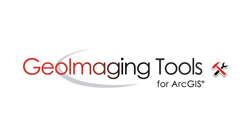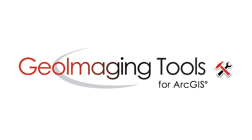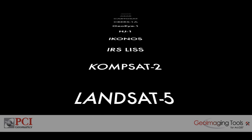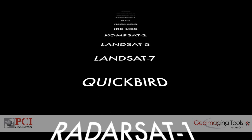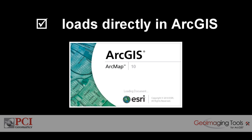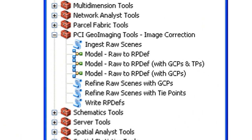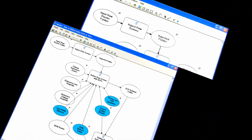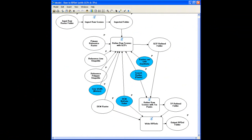Introducing Geoimaging Tools for ArcGIS. Geoimaging Tools allows users to integrate more satellite imagery directly into ArcGIS without duplicating any data. Geoimaging Tools is directly accessible inside ArcToolbox, allowing you to further streamline your overall workflow through the Model Builder or scripting.